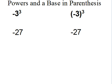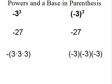In the first example, without parentheses, the base is 3 to the third, so it's 3 times 3 times 3. And then you just slap on the negative, which is how we get negative 27.